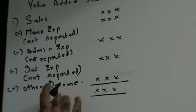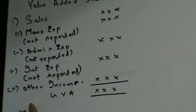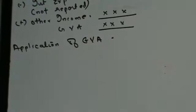You might ask: why are we making this? This is your same as a normal vertical income statement — why give it a different name and call it Gross Value Added? The reason is from this particular statement, I am going to find out what is the benefit that society is going to derive from it. So it is not the making of GVA that is important — it is the application of GVA that is important.